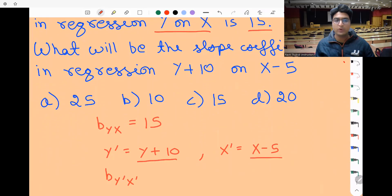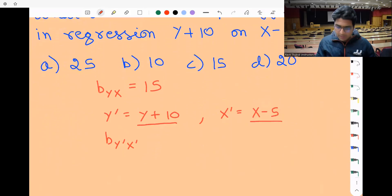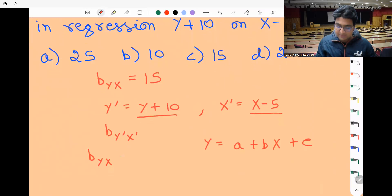So how do we calculate bYX? If you have regression Y = a + bX + e, then bYX is given by summation (Xi - X̄)(Yi - Ȳ) divided by summation (Xi - X̄)².